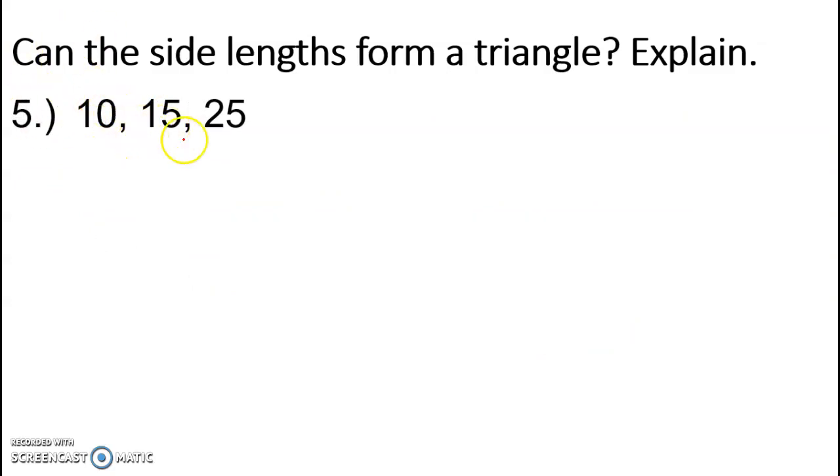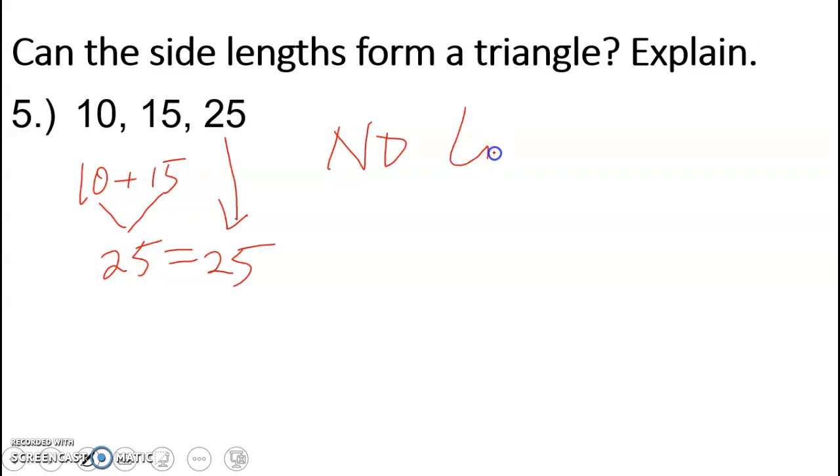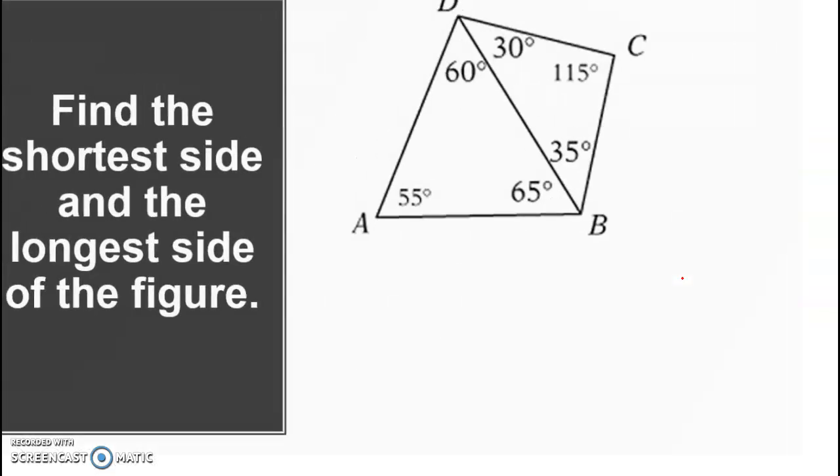How about this one? Again, it's easy to just pick the two smaller ones, 10 and 15. So if we add 10 plus 15 is 25. Well, 25 happened to be equal to 25. So no, even if it's zip wide, no, they're just touching. It doesn't close up. So no triangle, no triangle because 10 plus 15 is equal to 25, not greater than it. It has to be greater than it.